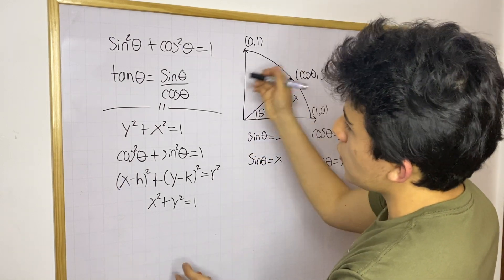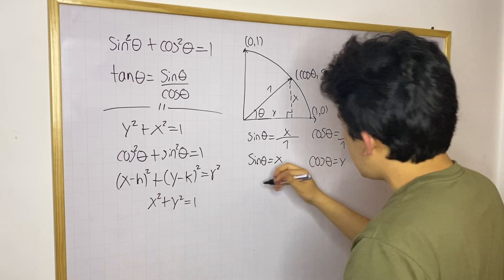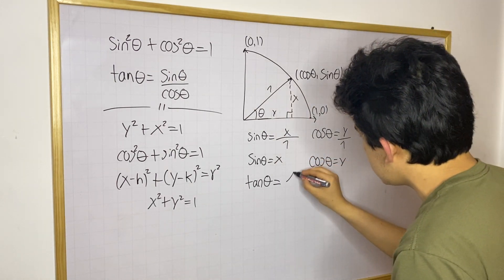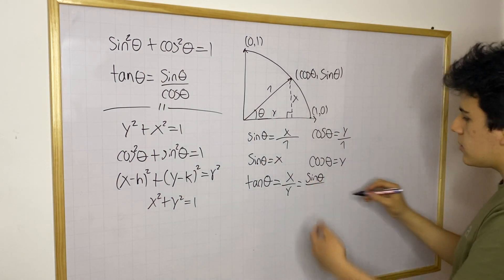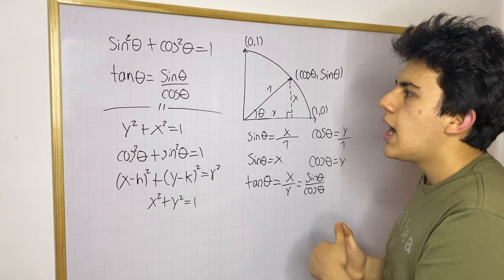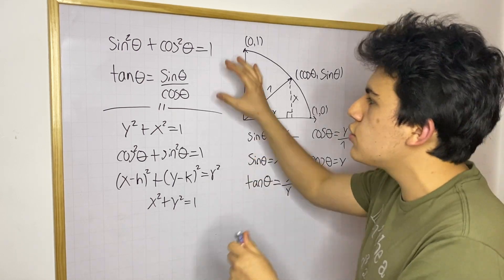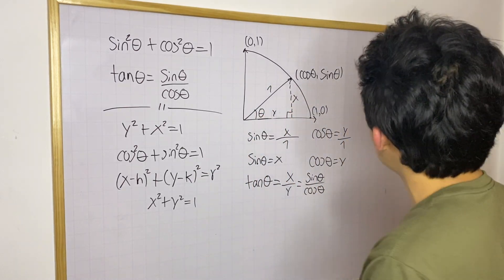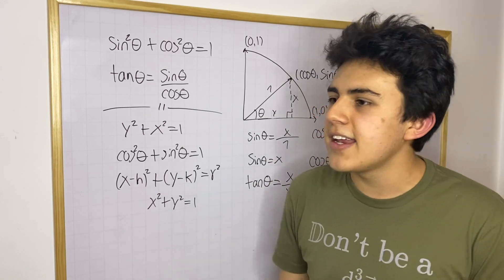For tangent theta equals sine theta over cosine theta, you can use the same triangle. Tangent theta equals the opposite side — which is x, equal to sine theta — over the adjacent side — which is y, equal to cosine theta. And there it is: the famous identity tangent theta equals sine theta over cosine theta. These two identities are going to be the most important for deriving others. I hope to show you more in the following video — I hope you learned something and enjoyed this mini lecture. See you next time!